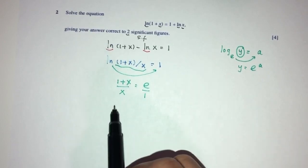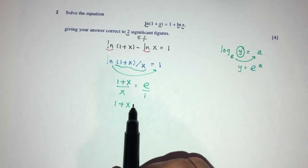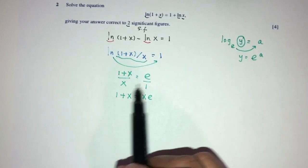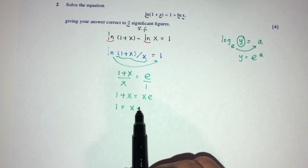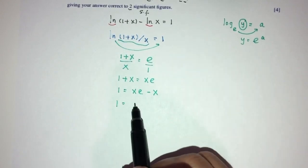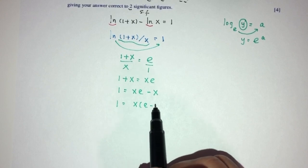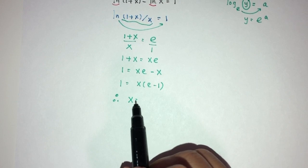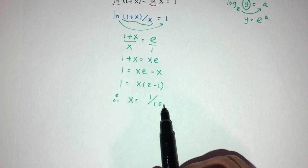Now cross-multiply, you will have 1 plus x is equal to x exponential. Send all the x to one side. You will have 1 equal to x exponential minus x. Now we can factorize the x. It will be x exponential minus 1. So finally, we conclude x will have to be 1 divided by exponential minus 1.